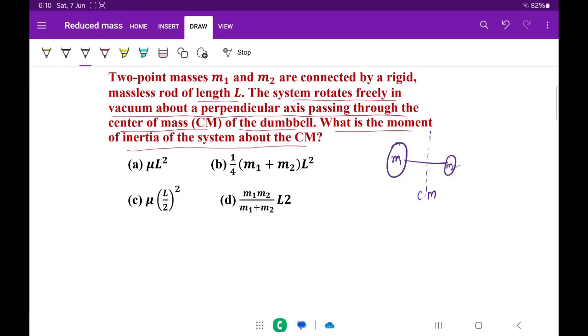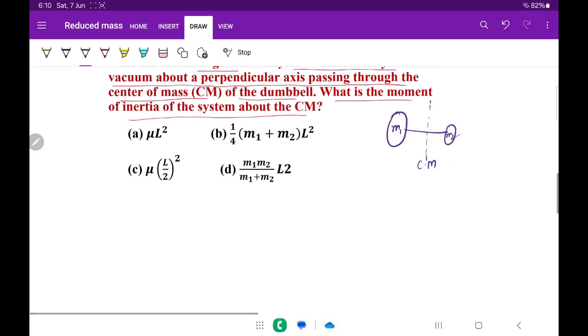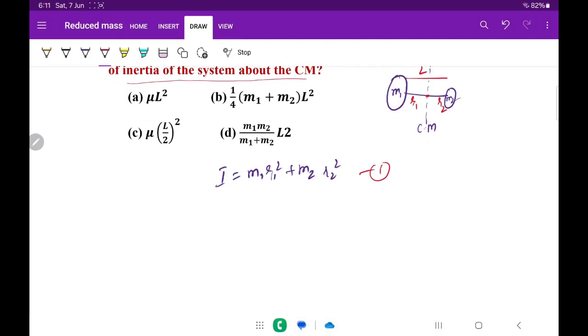This is a well-known example we solve in rotational mechanics. It's very important, not just a problem but a direct result. In such situations, the total moment of inertia of the body can be given as m1 r1 squared plus m2 r2 squared. Here, initially they are separated by length L. This is the center of mass. I'm taking this distance as r1 and this distance as r2. From the center of mass condition, we can write m1 r1 equals m2 r2.